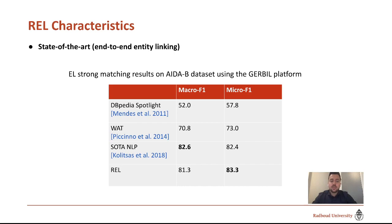REL has state-of-the-art results, on par with previous state-of-the-art results in NLP. We evaluated our model using the Gariball platform on the ATAB dataset. As an example, we obtained 81.3 and 83.3 macro F1 and micro F1 scores respectively.